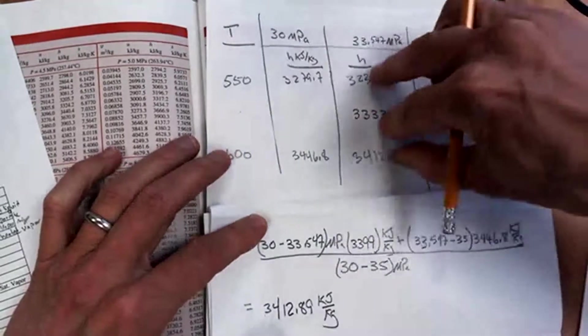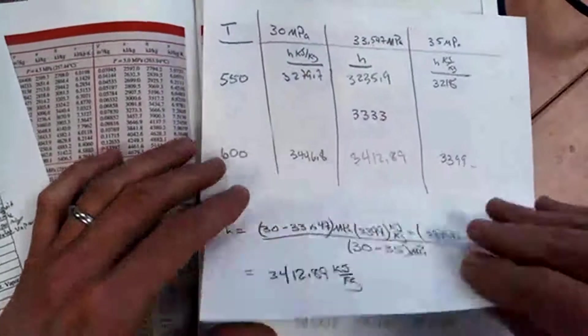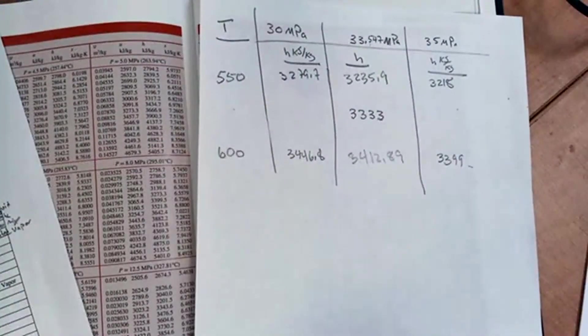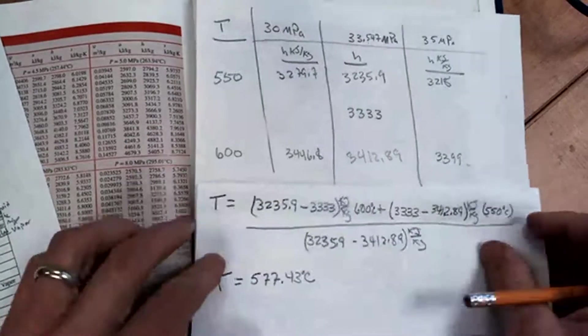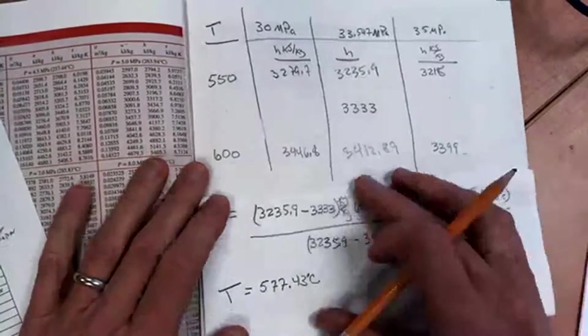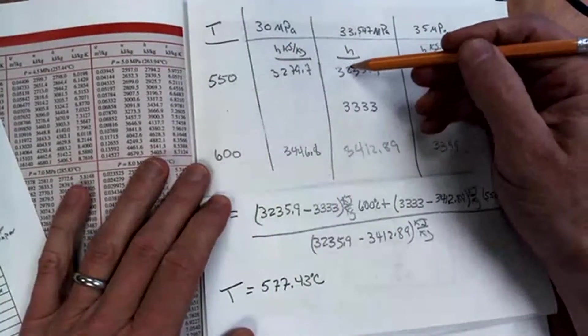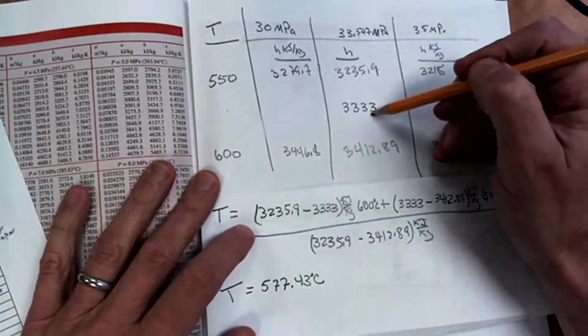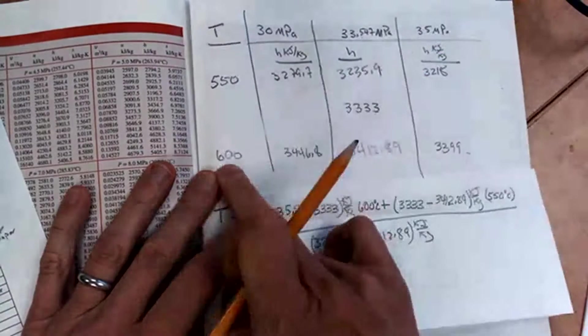So now I'm just going to interpolate between the H values and the T to get this value for temperature. That's what I got here. It's like a cooking show where they just bring out the pre-cooked turkey here. So to get this value, I'm going to say 3,235.9, the interpolated value minus 3,333 times the opposite, 600.